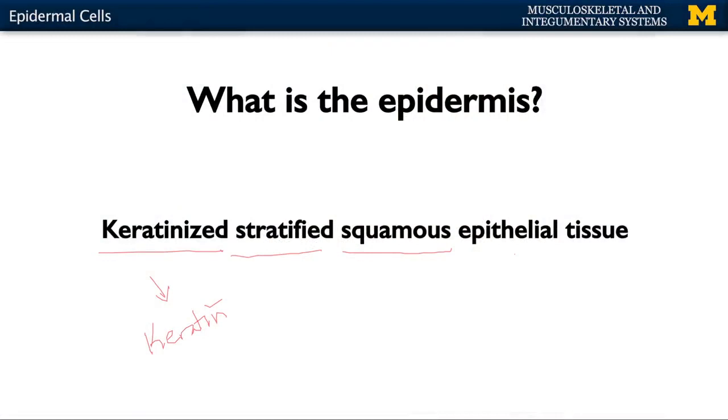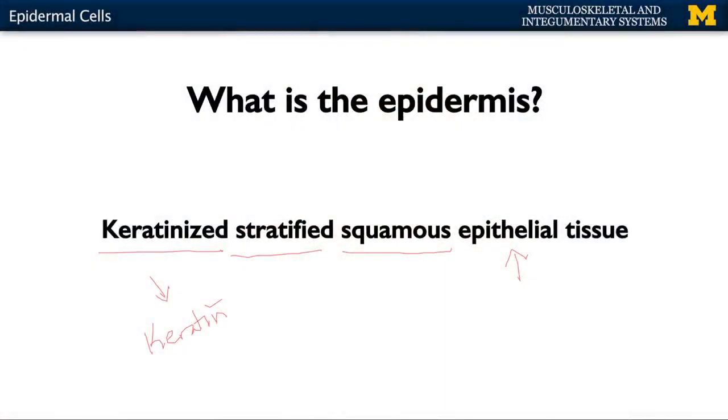Epithelial is one of the four main types of tissues of the body. We'll talk in detail about different types of connective tissue, but epithelial tissue lines surfaces — you'll find it associated with the gastrointestinal tract, for example. The integumentary system, or your epidermis, lines the entirety of your body, so it is a type of epithelial tissue.